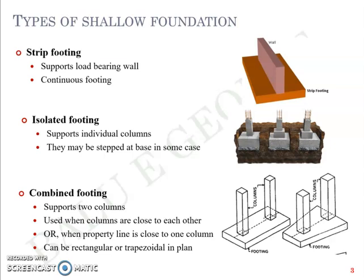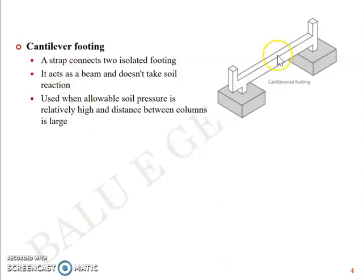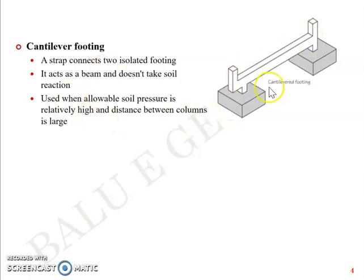We also have what is called a cantilever footing. There will be a strap or connecting member which connects two isolated footings, acting as a beam. Column number one and column number two, which form part of the superstructure, are connected by a strap or cantilever and rest on two individual isolated footings. The beam or strap connecting the two footings does not actually take soil reaction. Cantilever footing is used when the allowable soil pressure is relatively high and the distance between columns is large.